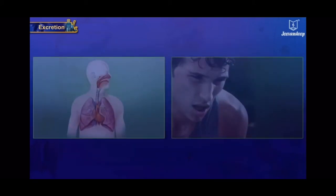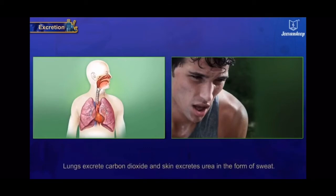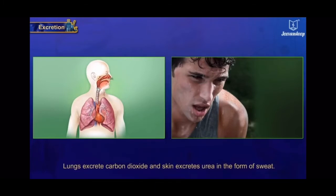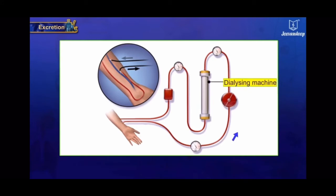Besides kidneys, the lungs and the skin also help in the process of excretion. Lungs excrete carbon dioxide and skin excretes urea in the form of sweat. When the kidney fails, an artificial device is used for removing nitrogenous waste matters from the blood. This device is known as a dialyzing machine and the process is known as hemodialysis.